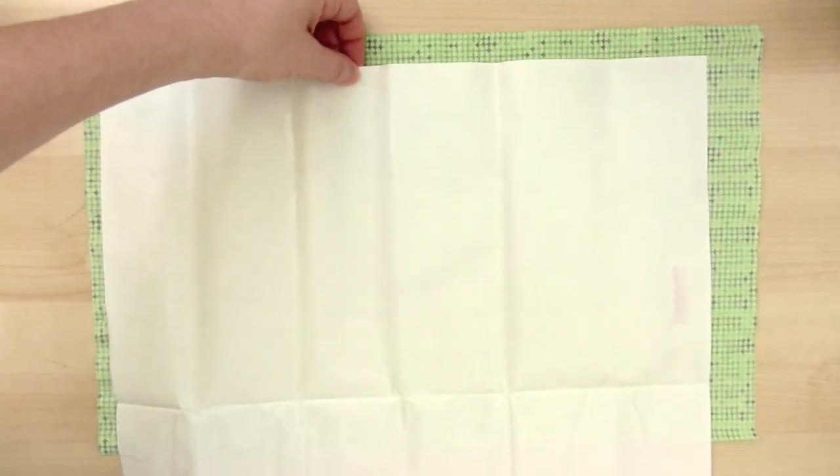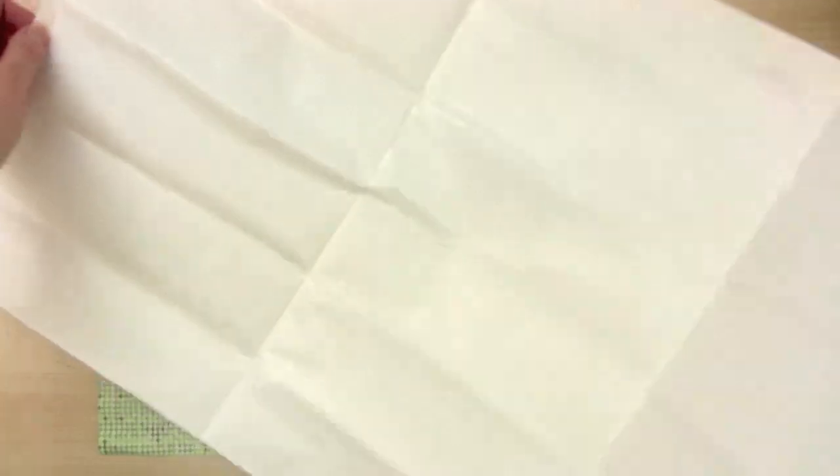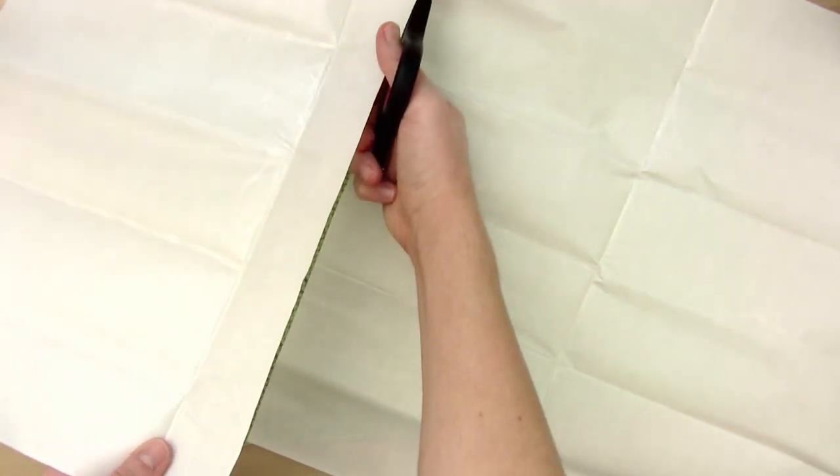Cut the HeatNBond a little smaller than your piece of fabric, so you have a border. This gives you an area to handle the fabric and prevents the HeatNBond sticky side from being on the edges.